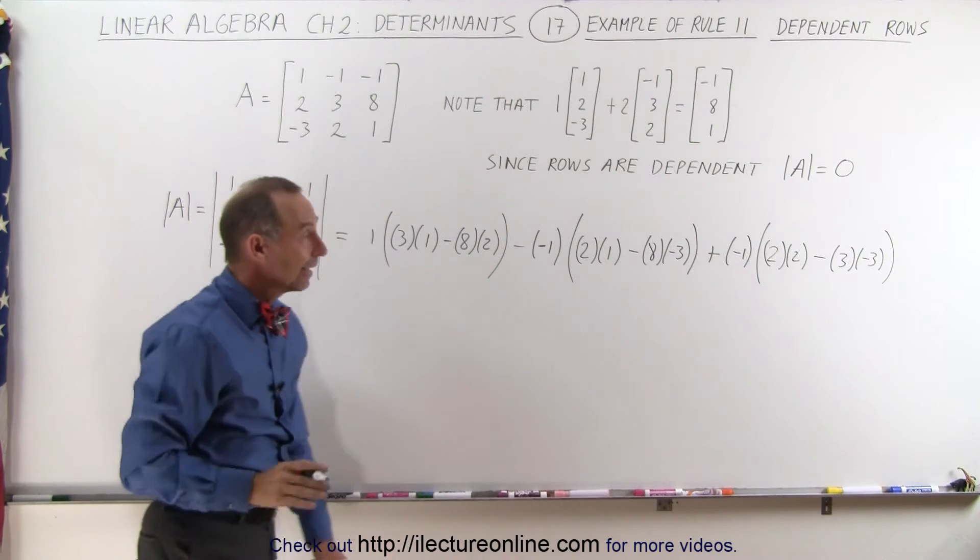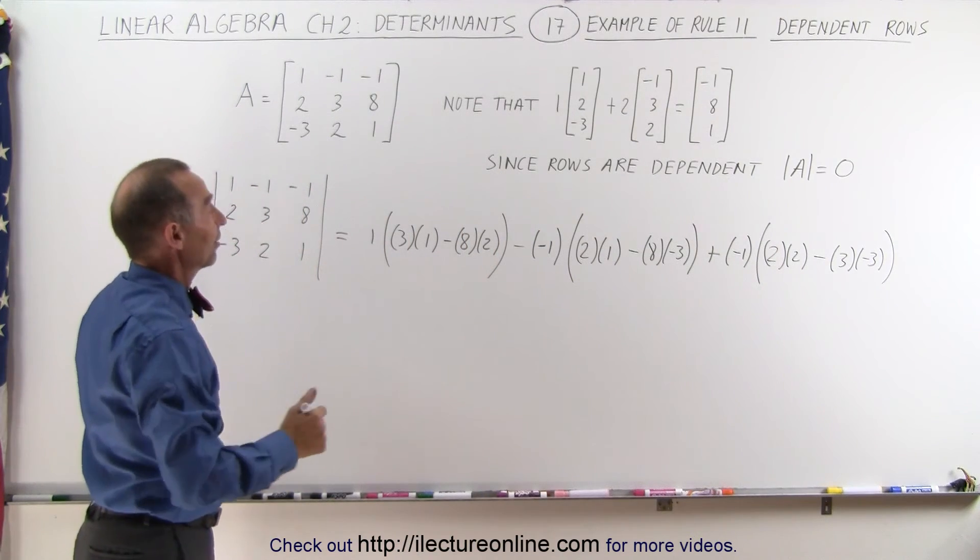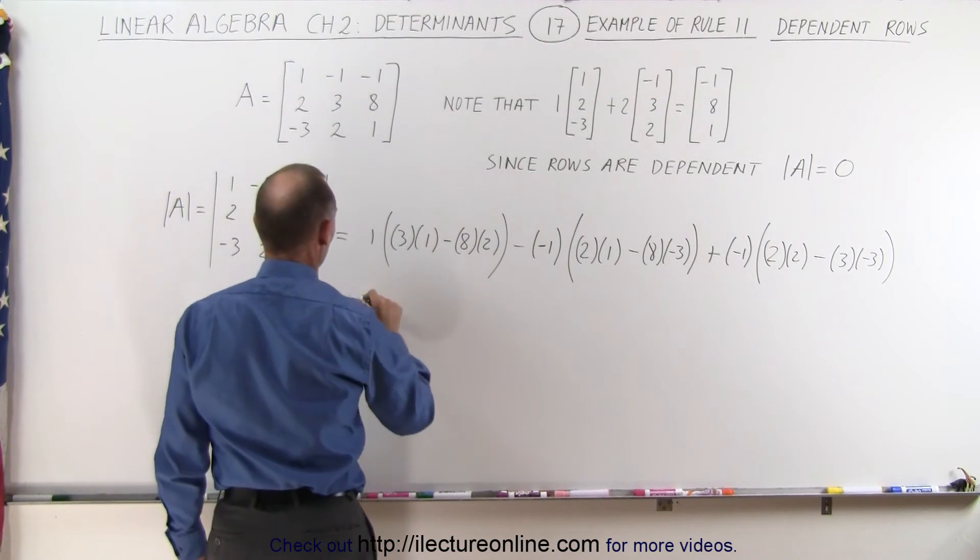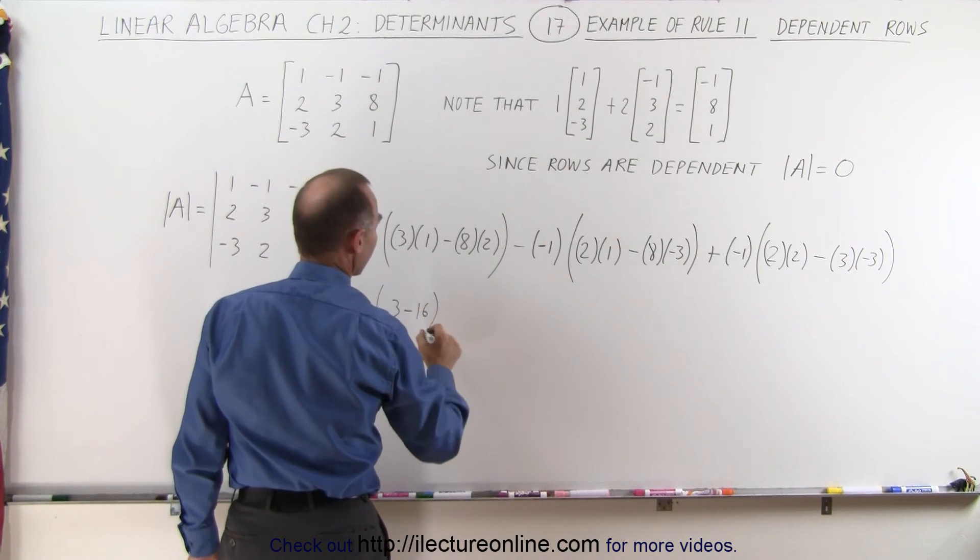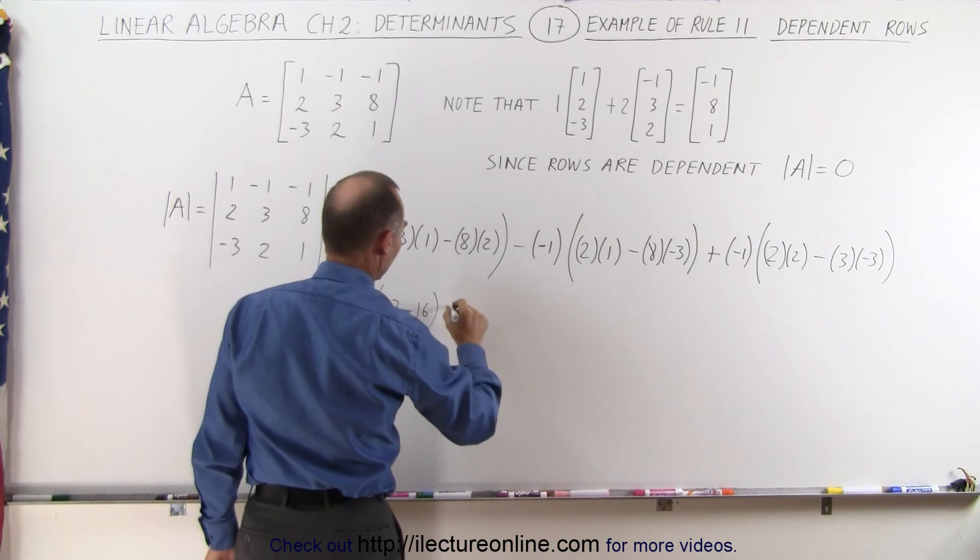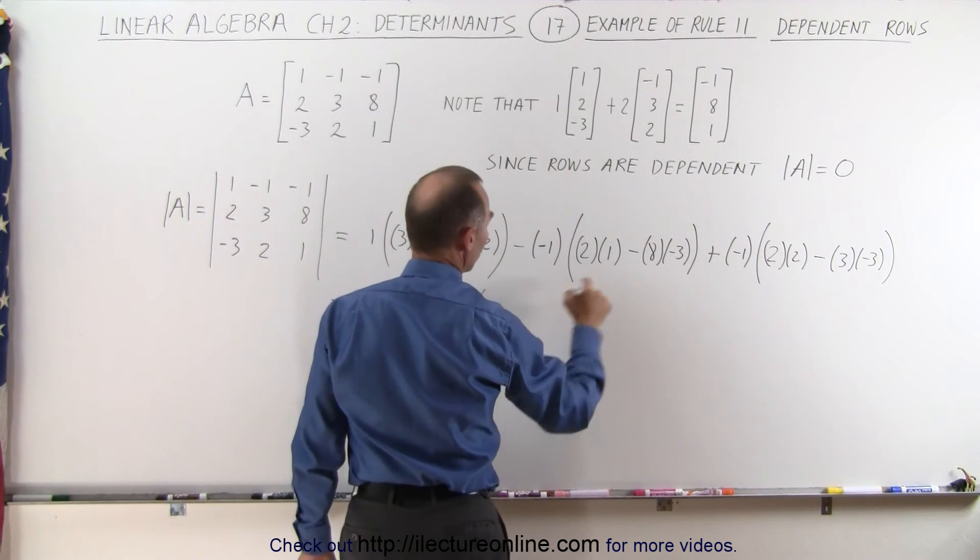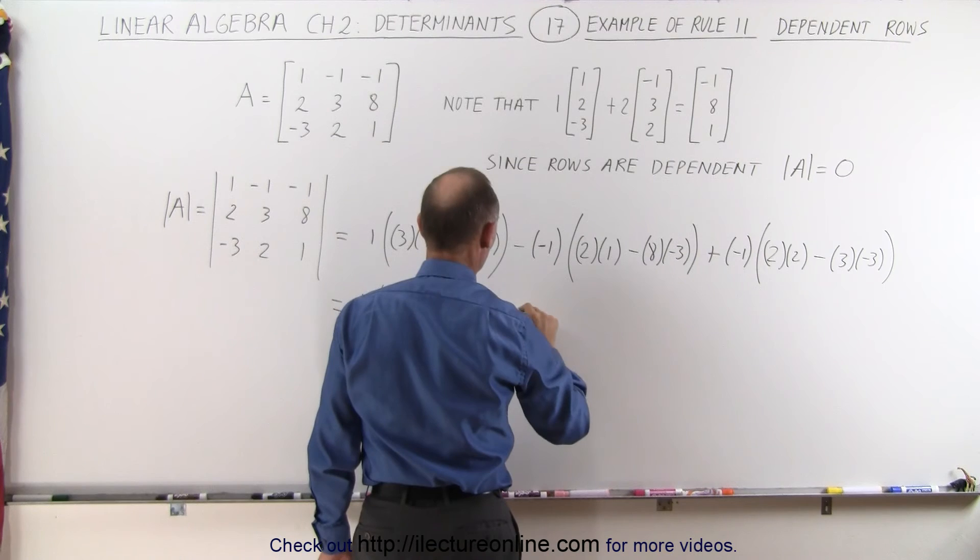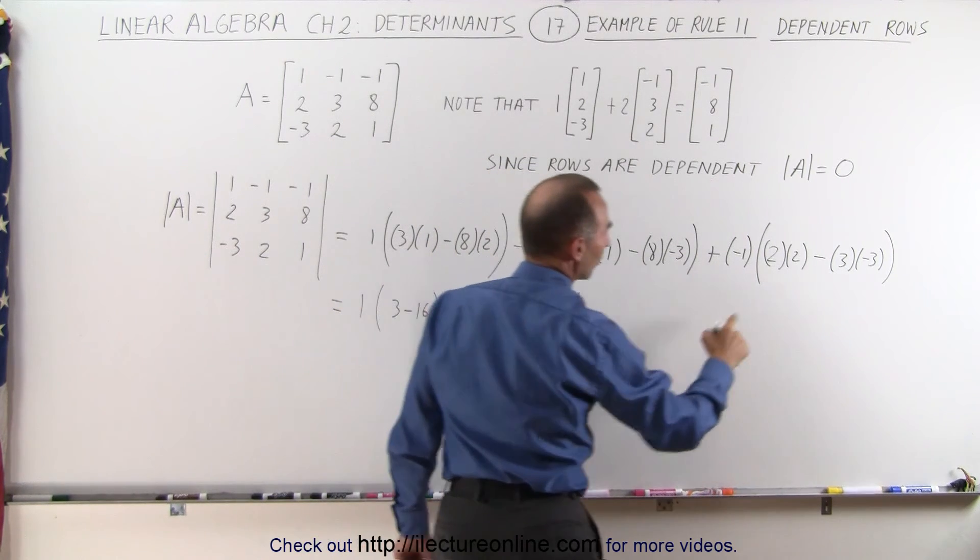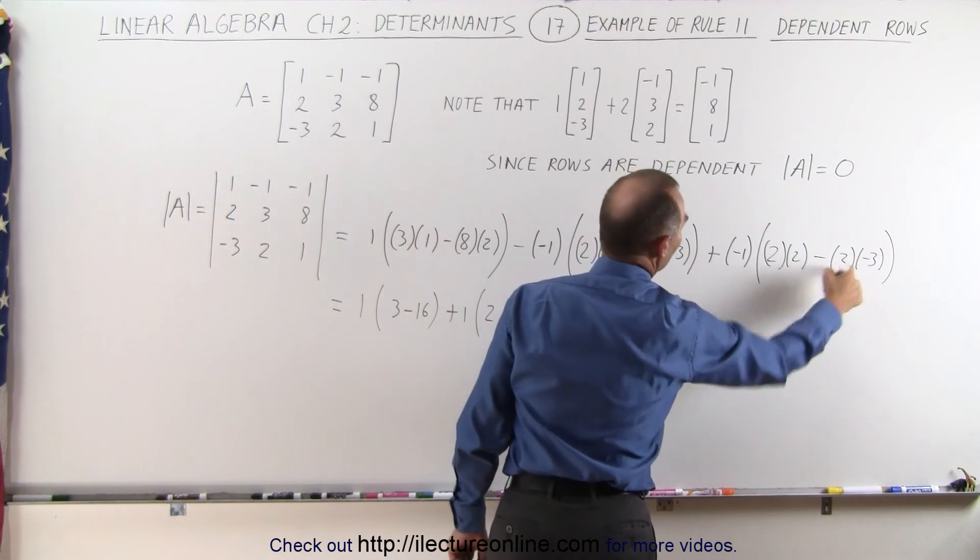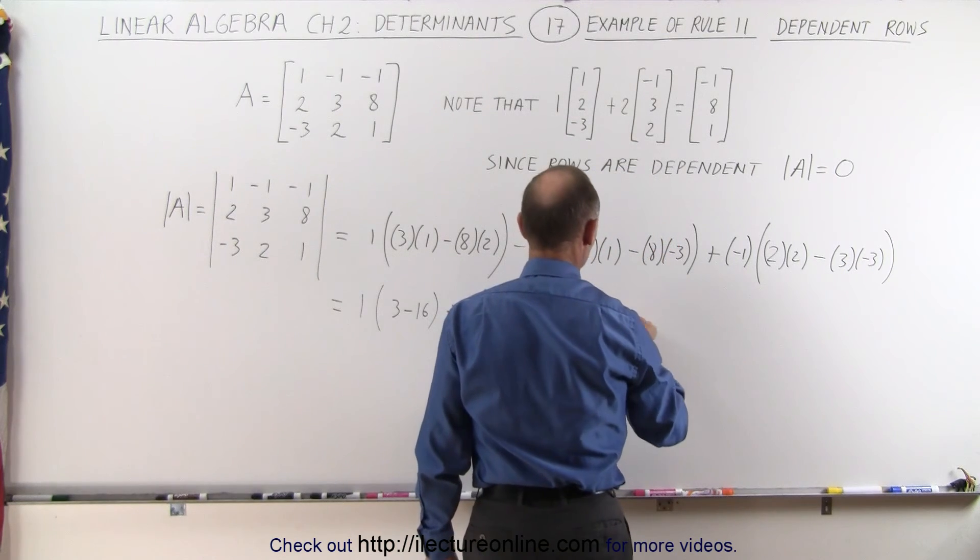When we simplify that, that should equal 0. Let's find out. This is equal to 1 times 3 minus 16, minus times a minus is plus 1 times 2 minus times a minus is plus 24, and we get minus 1 times 4, minus times a minus is plus, so 4 plus 9.